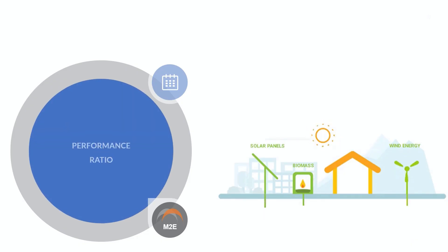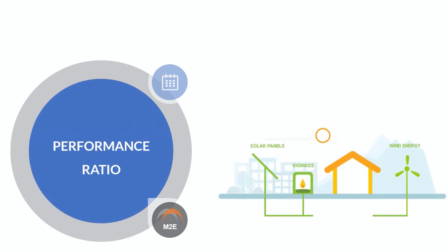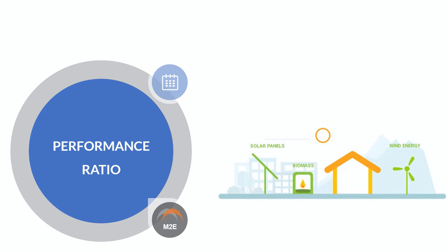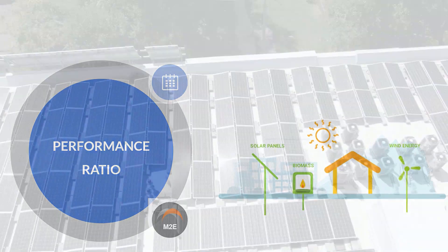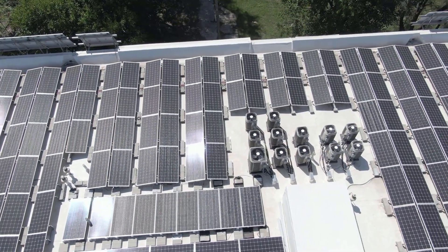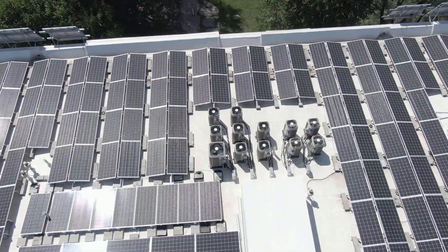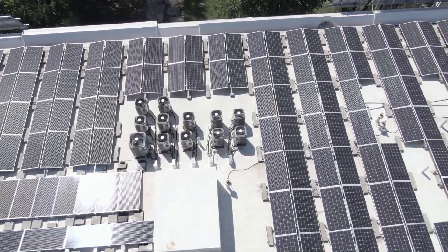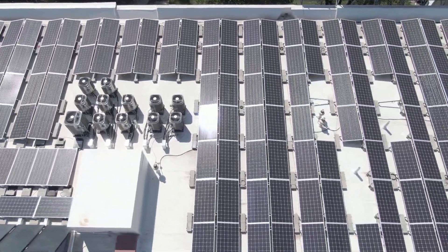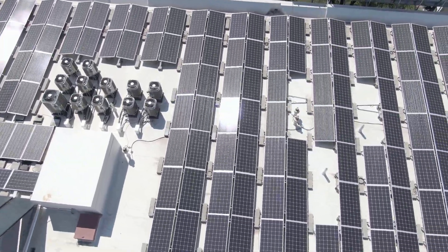Today's topic is solar plant performance ratio, or in short, PR. PR is a very important tool or factor that is being used globally by companies and professionals to assess the healthiness of a solar PV system. So let's understand how PR is calculated and why it is so important.